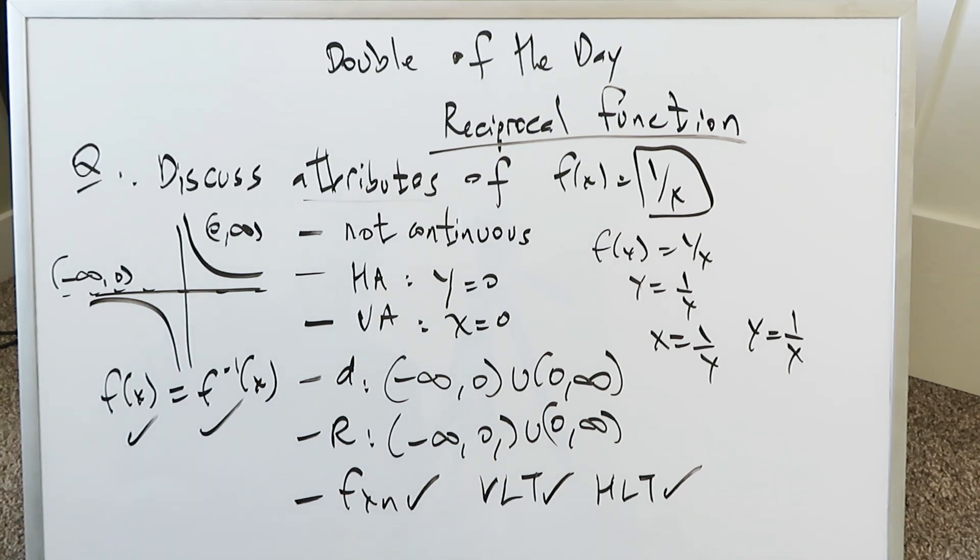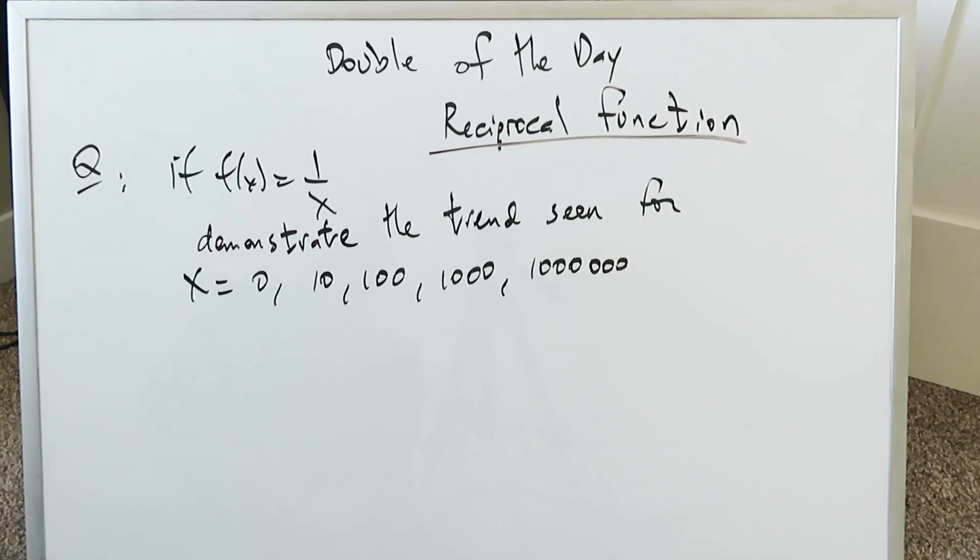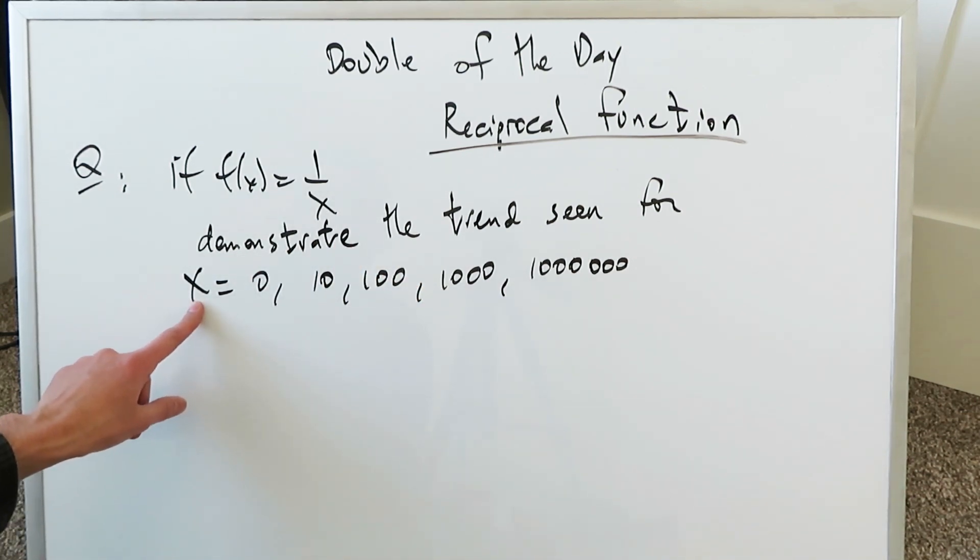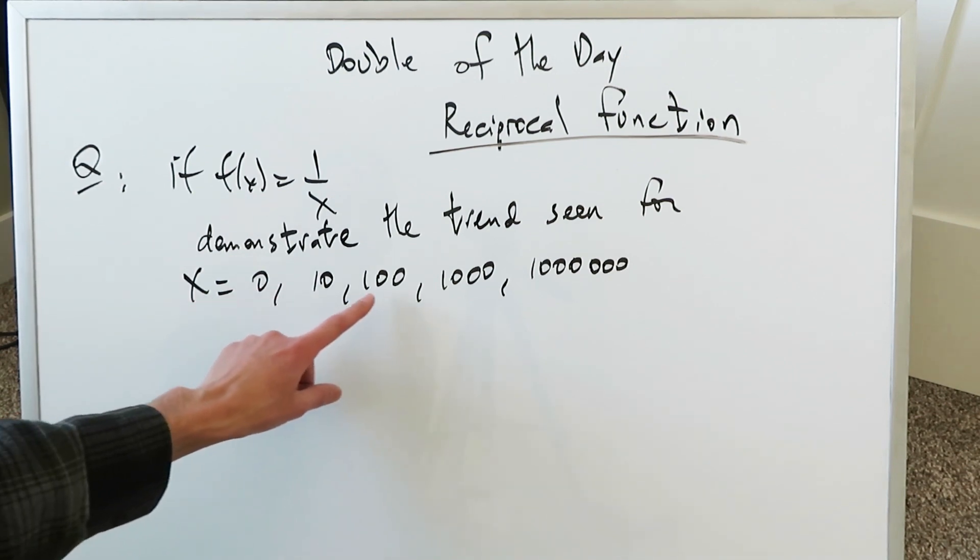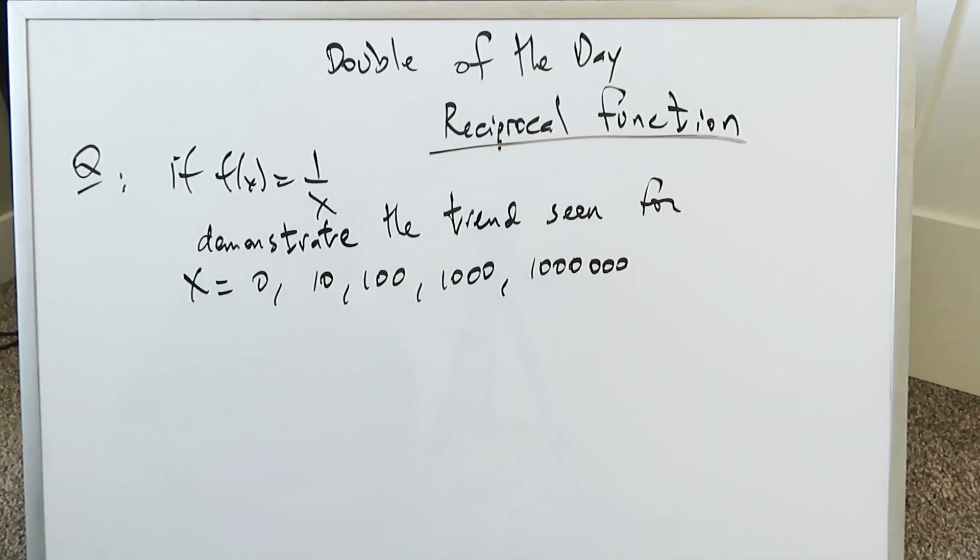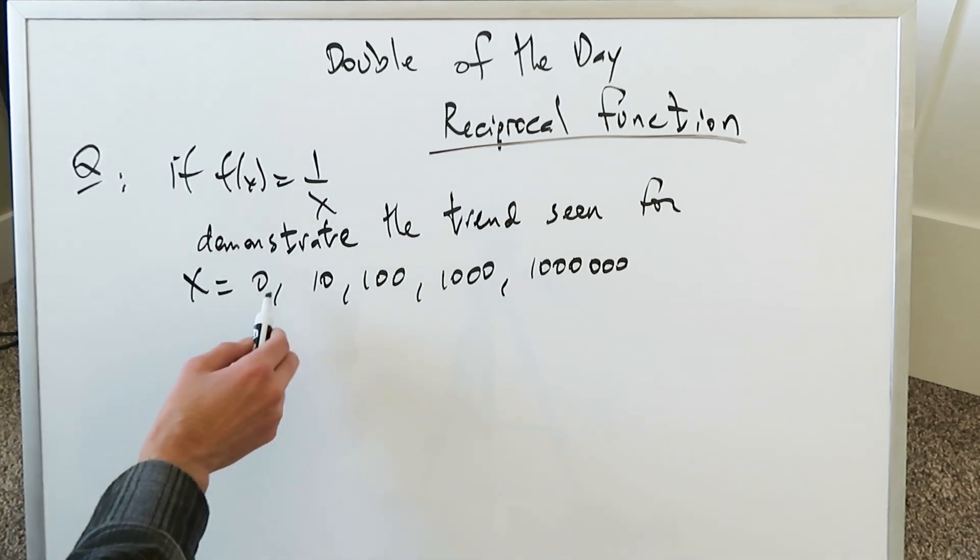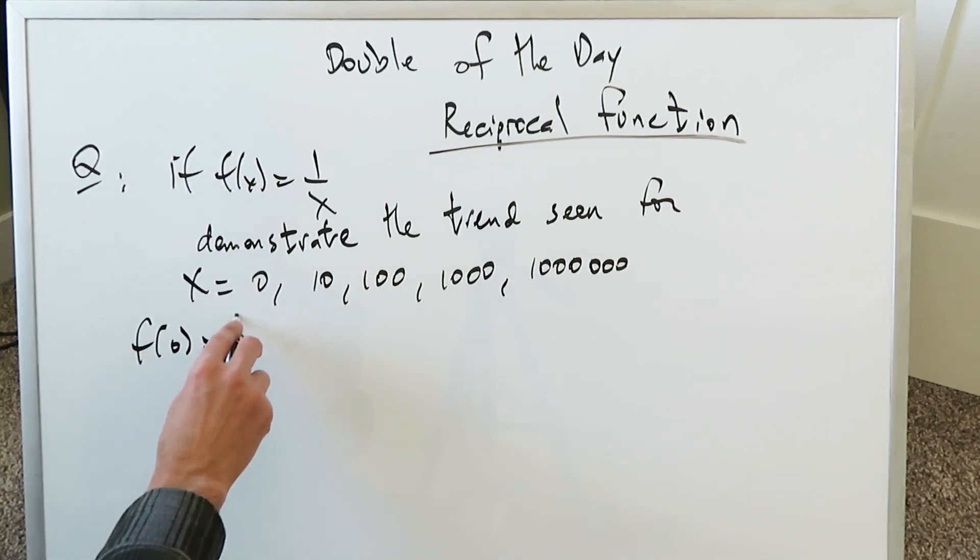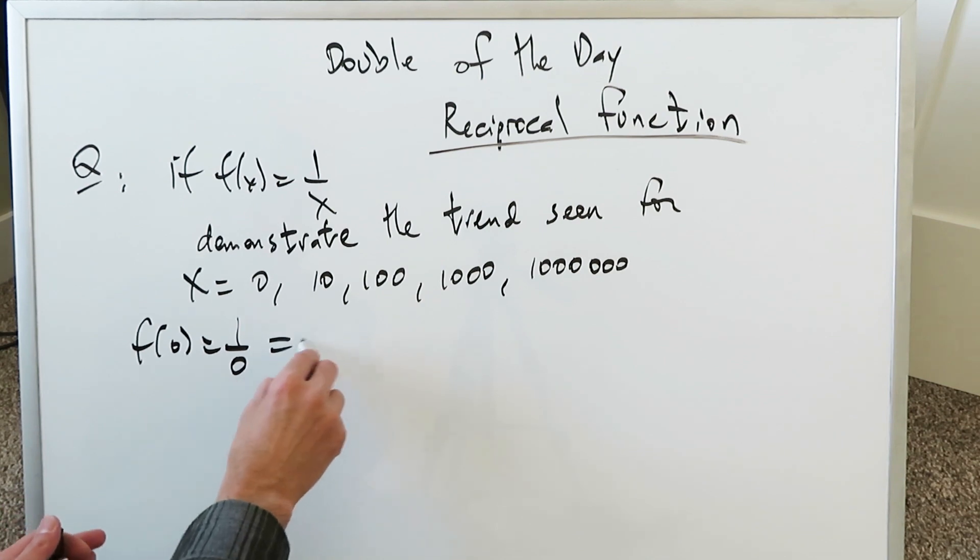Let's look at a second question for this video. We have f(x) is equal to 1 over x, your reciprocal function. We have to demonstrate the trend that's seen for these domain values, x values of 0, 10, 100, 1000, and you know what we're talking about here. What is the output as you put in these values? If you look here at each of these x-axis values, you put them in your function. f of 0 would be 1 over 0, which is undefined.